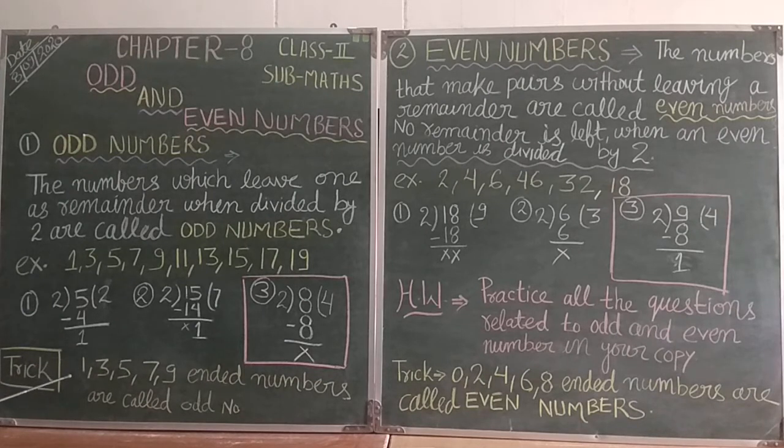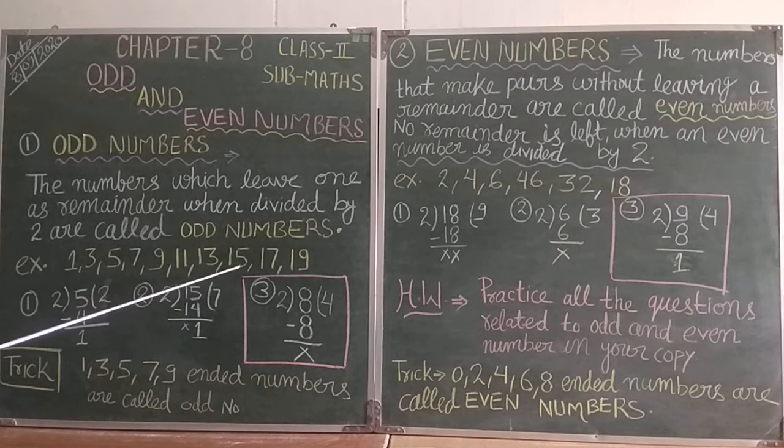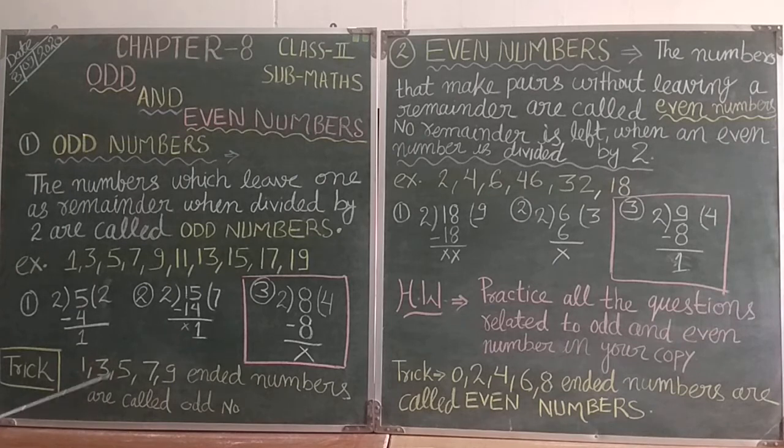Here I will tell you a short trick. 1, 3, 5, 7, 9 are odd numbers. You have to check the last digit. If it is 1, 3, 5, 7, or 9, then it is an odd number. So 5 is an odd number, 7 is an odd number, 9 is an odd number. By checking the last digit, you can know if it is an odd number.